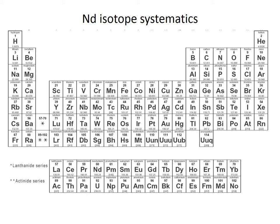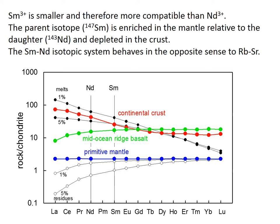The neodymium isotope system works in a very similar way. Samarium-147 decays to neodymium-143 by alpha decay. It works slightly the other way around: when you melt the mantle, samarium is slightly more compatible than neodymium, so neodymium is enriched in the continental crust. What's left behind — the residual mantle — is depleted in neodymium and has more samarium.